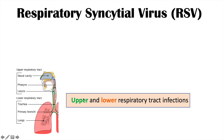It is an important cause of both upper and lower respiratory tract infections. Upper respiratory tract infections are at the larynx and above — involving the nasal cavity, pharynx, or larynx. Lower respiratory tract infections are things below the larynx, including the trachea, the mainstem bronchi, and other parts of the lungs like the alveoli. RSV can cause infections in all of these areas.